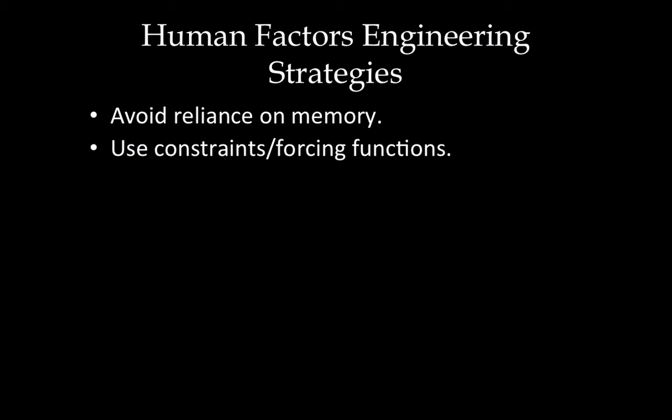The second strategy is to use constraints or forcing functions. Forcing functions are where there would be no chance for you to make a mistake. One of the biggest examples is in the intensive care unit — you have vents for vacuum and vents for oxygen. The way the vents are designed and color coded, you cannot fit a vacuum vent into an oxygen vent and vice versa. This is a forcing function — it forces the vacuum vent to be used for vacuum and the oxygen vent for oxygen, which forces you into the right behavior.